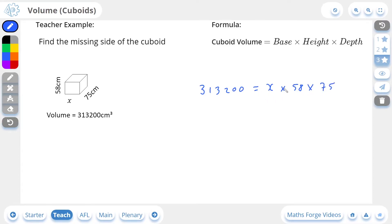So to find the missing side in this case is just to rearrange for x. And how we're going to do this is as follows. We have the times 58 and times 75 attached to the x. So we're going to detach it by division. So it's going to be divided by 58.